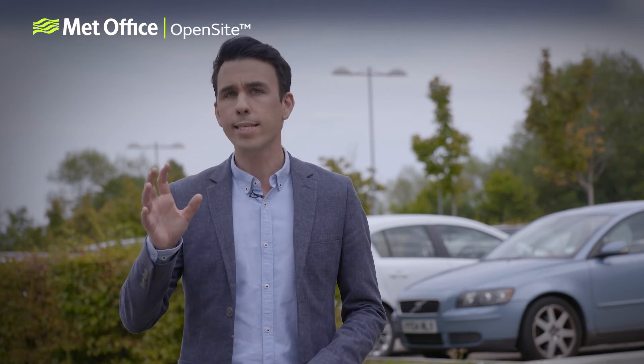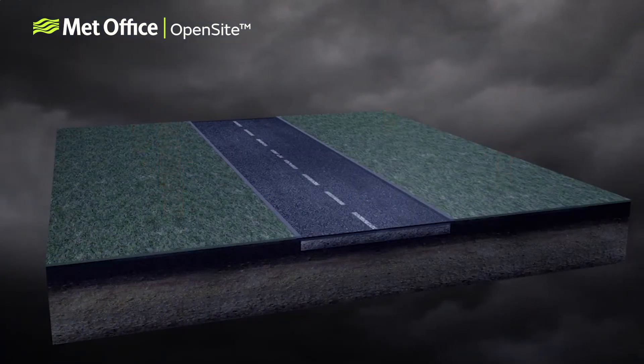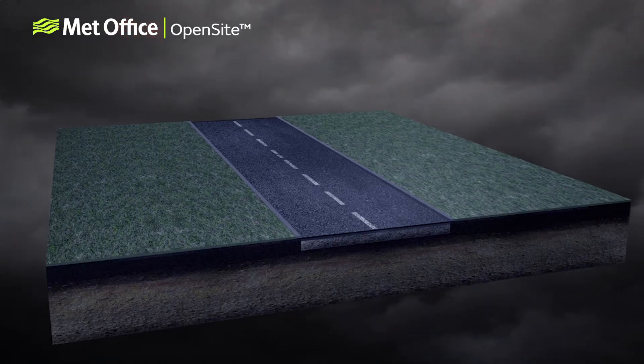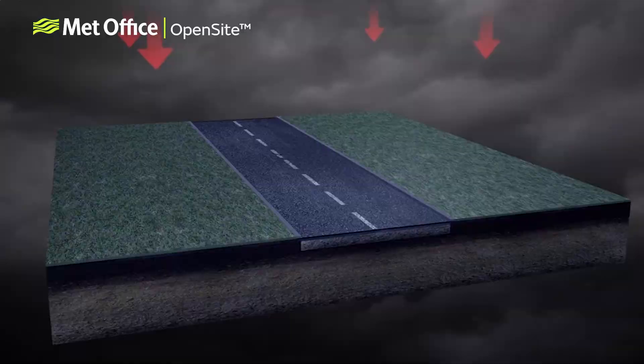Cloud cover can also influence the RST. If it's cloudy overnight, heat released from the ground and radiated up towards the clouds is then re-radiated back down from the clouds to the ground. This keeps the ground and road surfaces warmer than might be expected. If there is no cloud, temperatures will often quickly drop.